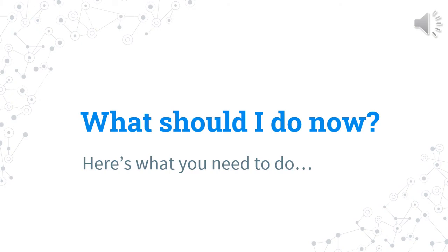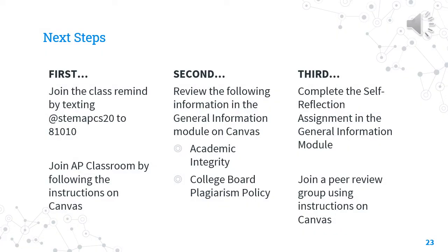So what should you do now? Now that you have the basic overview of what AP Capstone is, here's what you actually need to do. First, after getting into Canvas, join the Class Remind by texting @STEMAPCS20 to 81010. This will add you to the Class Remind and give you access to sending me messages. Join AP Classroom by following the instructions posted on Canvas. After that, review the Class Academic Integrity Policy and the College Board Plagiarism Policy in the General Information module on Canvas. Lastly, complete the self-reflection assignment in the General Information module, and using the instructions on Canvas, join a peer review group.